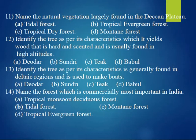Deodar wood was used to make pillars in big palaces and also doors for temples. Thirteenth question: identify the tree as per its characteristics — found in the delta region and used for making boats. The answer is B, Sundari trees.